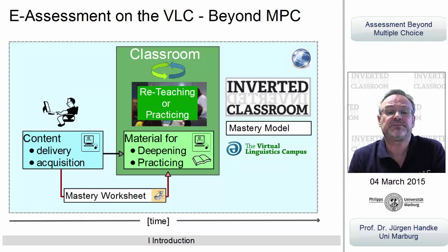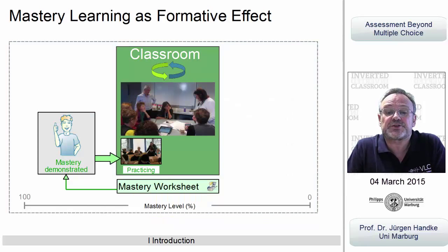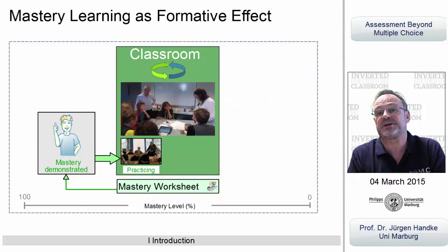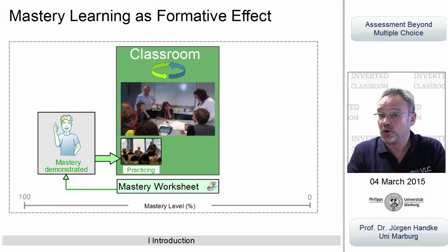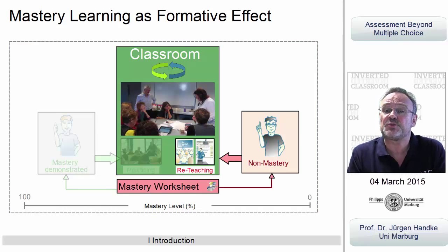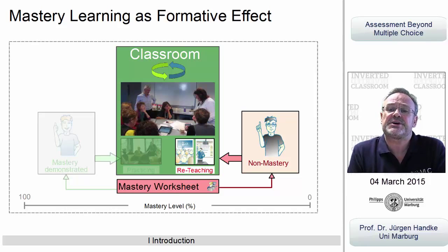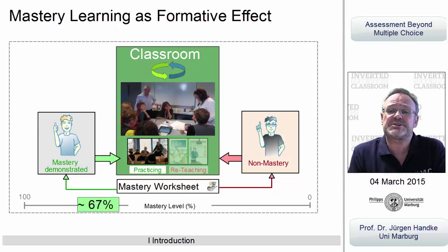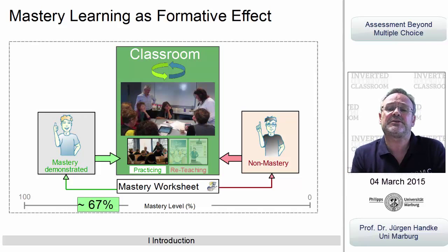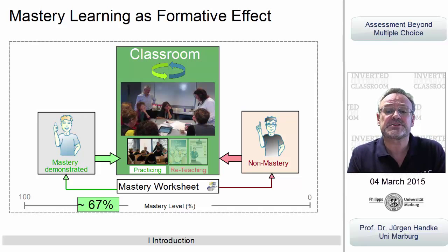A high mastery level does not require much frontal input in class and leads to more intensive practicing, whereas a low mastery level requires more reteaching activities. The average mastery level in classes offered via the Virtual Linguistics Campus is around a high value of 67%, meaning the in-class phase can be dedicated to practicing and deepening with very few selected frontal parts.